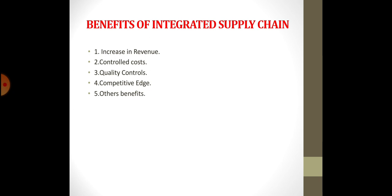Integrated supply chain management helps you control costs. You have to follow all processes, especially where transactional costs are unavoidable with partners and vendors. Quality control is also important in supply chain management — ensuring the quality of the product is maintained so that the customer receives an updated, quality-controlled product.